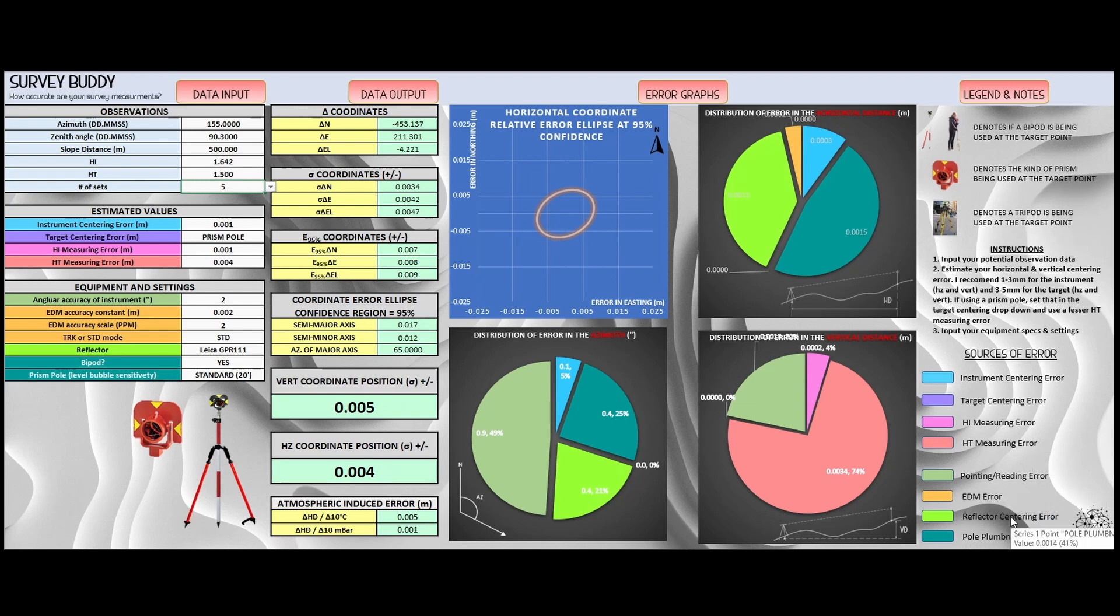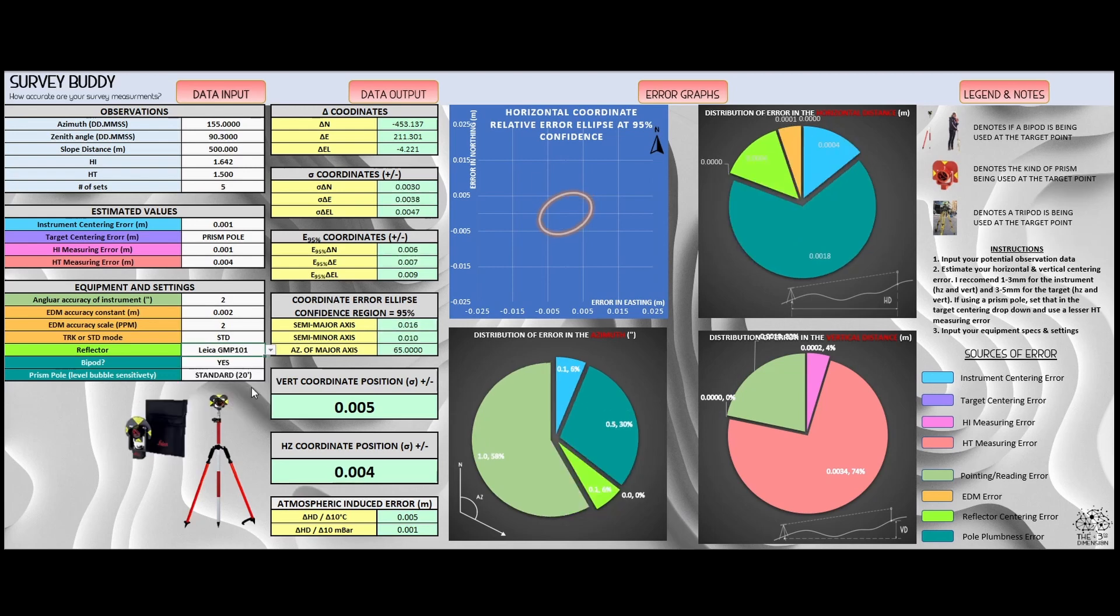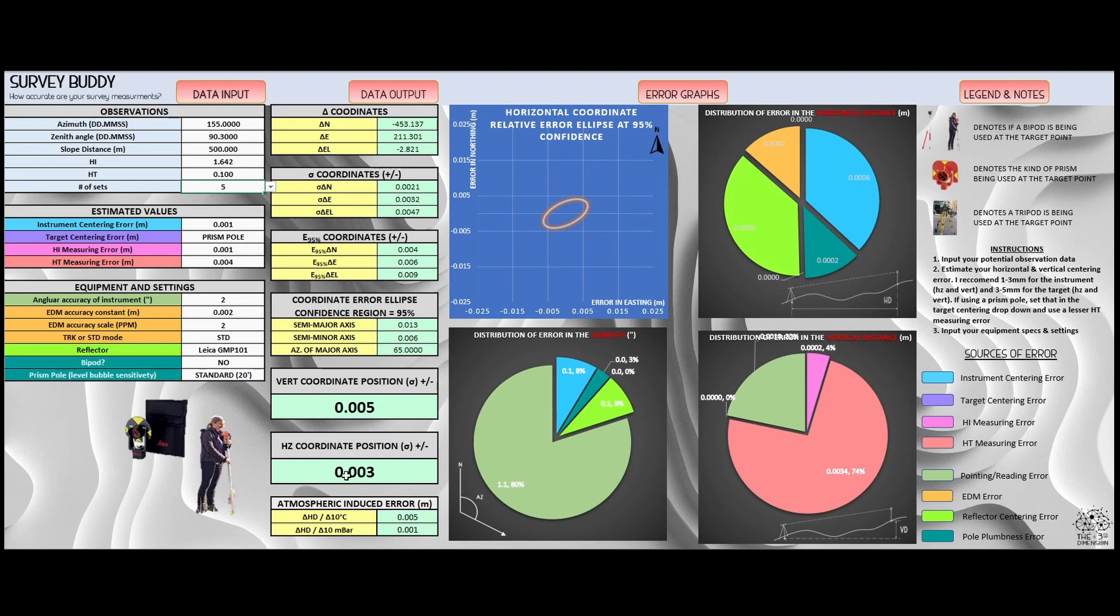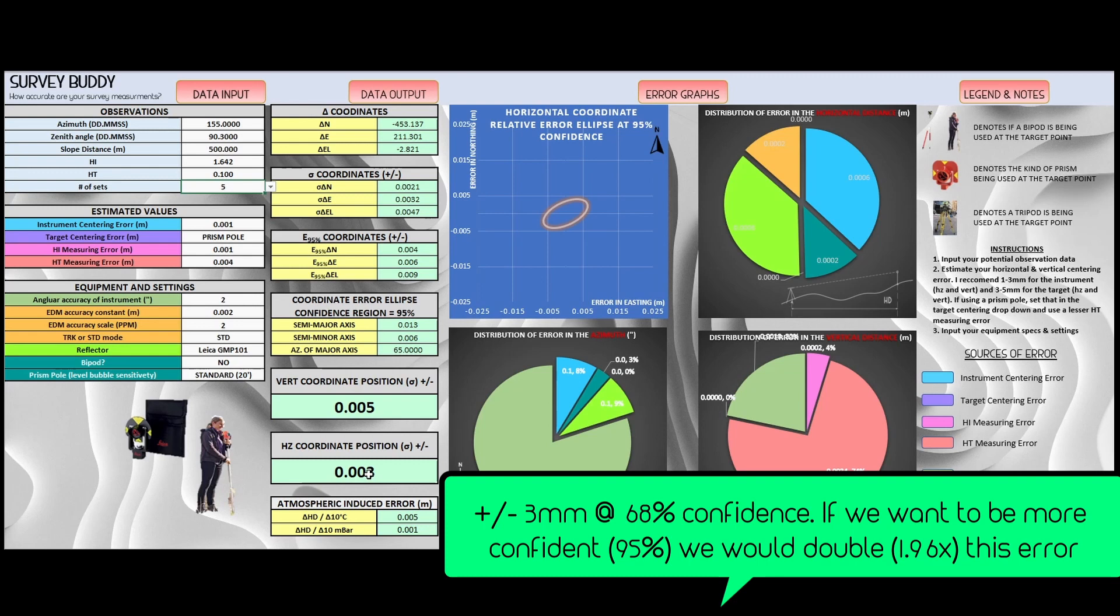Trying to reduce the error by one more mil. We can see that our reflector centering error is also giving us quite a bit of error in this situation. What if we grabbed that better prism we have in our truck? Our GMP 101 brought that error down quite a bit, but we're still at four mils. Our pole plumbness error, we can see that's making up quite a big portion of error now. We're using our prism pole with a bipod, but we're at 1.5 meters. What if we took away our bipod, which is going to greatly increase our error, but we reduce our height of instrument to a single mini extension 0.1. There we go. We're down to our three mils as specified by our customer.